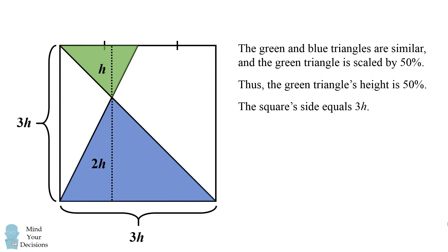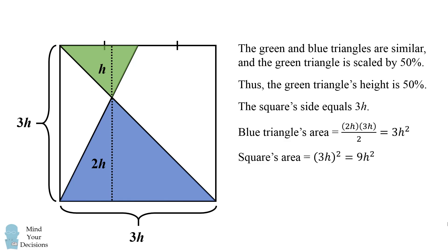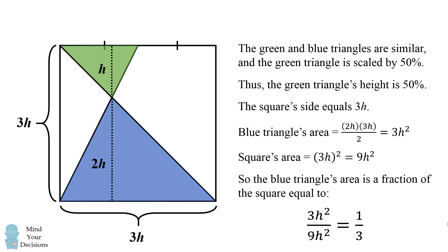Now we can solve for the area of the blue triangle and the area of the square in terms of h. The blue triangle's area is one-half times its height times its base: 2h times 3h, all over 2, which equals 3h squared. The square's area is its side length squared: (3h)² = 9h². The fraction of the square that's shaded is 3h² over 9h², which simplifies to one-third.